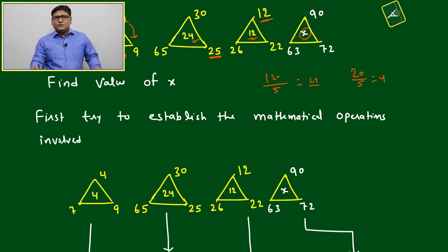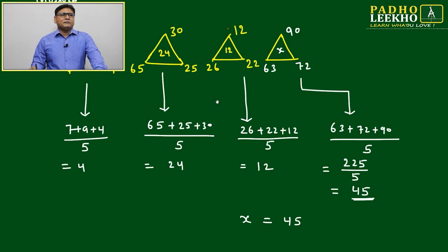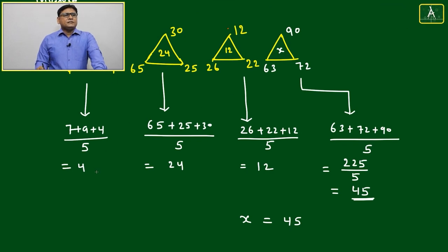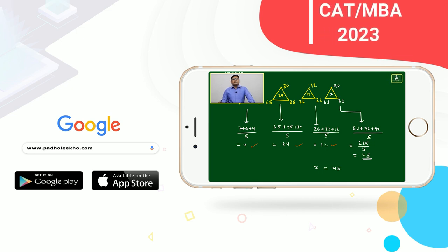So the pattern is: add the periphery numbers and divide by 5. For the unknown: 63 plus 72 plus 90 equals 225. Divided by 5, we get 45. Therefore, x must equal 45.